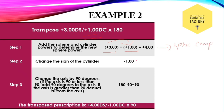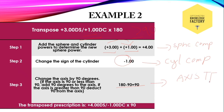Step 2: change the sign of the cylinder. Here the cylinder is convex. Change it into concave by adding a minus sign. This is the cylindrical component. The last step: change the axis by 90 degrees. Here the axis is 180, which is greater than 90. So subtract 90 degrees to find out the axis of the transposed form. 180 minus 90 is 90. This is the axis of the transposed form. The transposed form of plus 3 diopter sphere with plus 1 diopter cylinder at 180 is plus 4 diopter sphere with minus 1 diopter cylinder at 90.